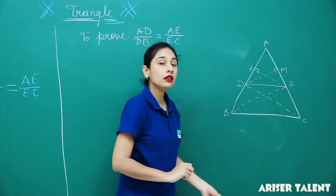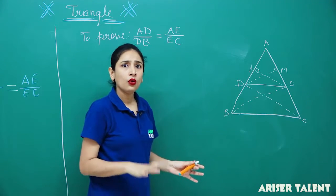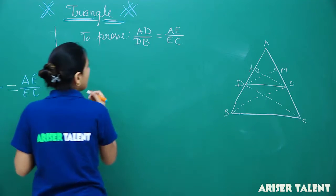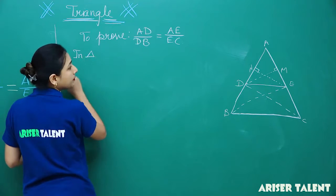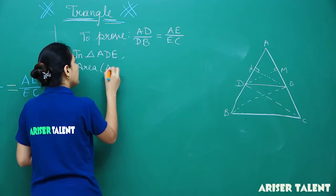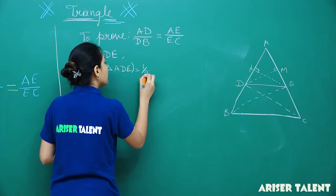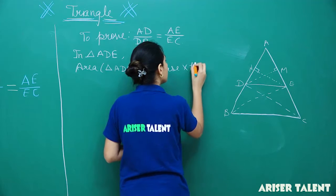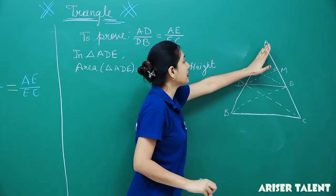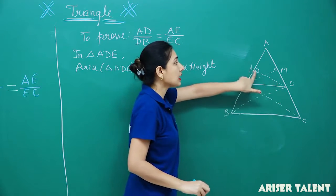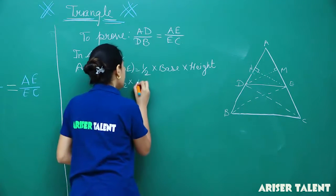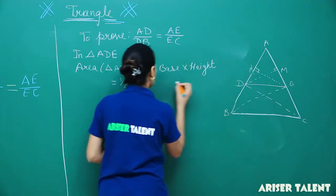What will I do? I am going to write the area and calculate it — it is just so simple. So in triangle ADE, area of triangle ADE will be half multiplied by base multiplied by height. If you have base as AD, the perpendicular will be EN. So your area will be half multiplied by AD multiplied by EN.